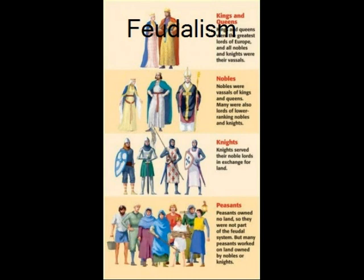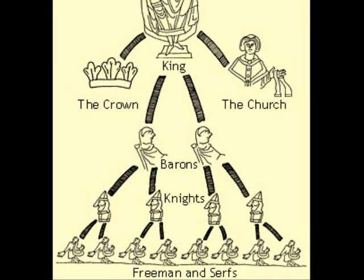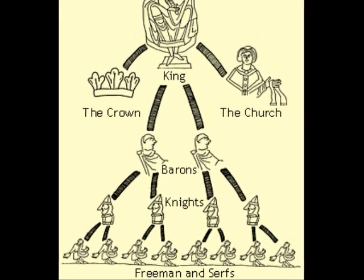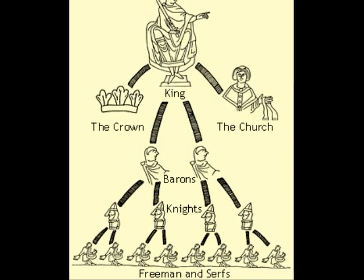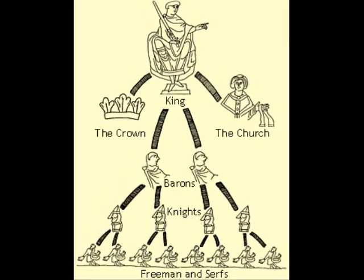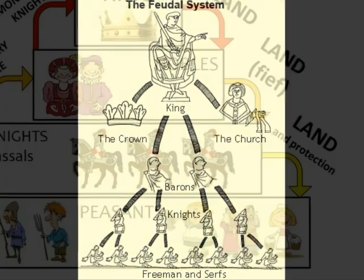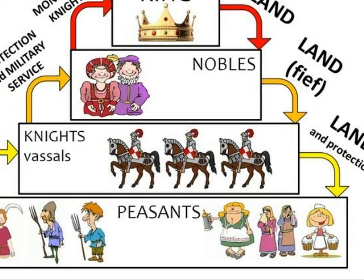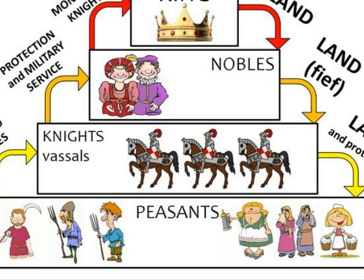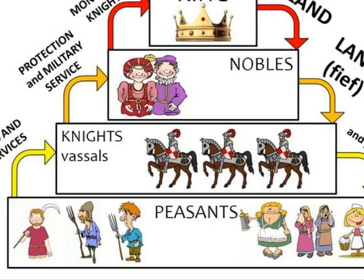2. Feudalism. From the second half of the Middle Ages, Europe was run by a system of government known as feudalism. Under feudalism, the land in a country was owned by the king, who passed on most of it to his so-called vassals, who were the barons and bishops in the country. This land was called a fief, and in return for it, the vassals agreed to be loyal to the king and to provide soldiers for the king's army when needed.